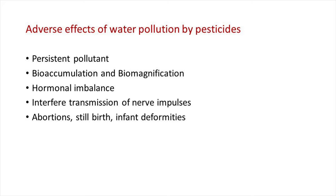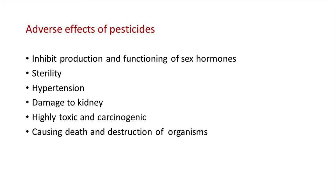The toxic effects of pesticides on humans include: excessive concentrations of chlorinated hydrocarbon pesticides in human tissues cause hormonal imbalance, cancer of the organs, and leukemia. Organophosphate pesticides interfere with the transmission of nerve impulses causing tumors, spasms, convulsions and paralysis. Pesticides also inhibit the production and functioning of sex hormones leading to sterility. Higher concentrations of pesticides in pregnant women may result in abortions, stillbirths and infant deformities.